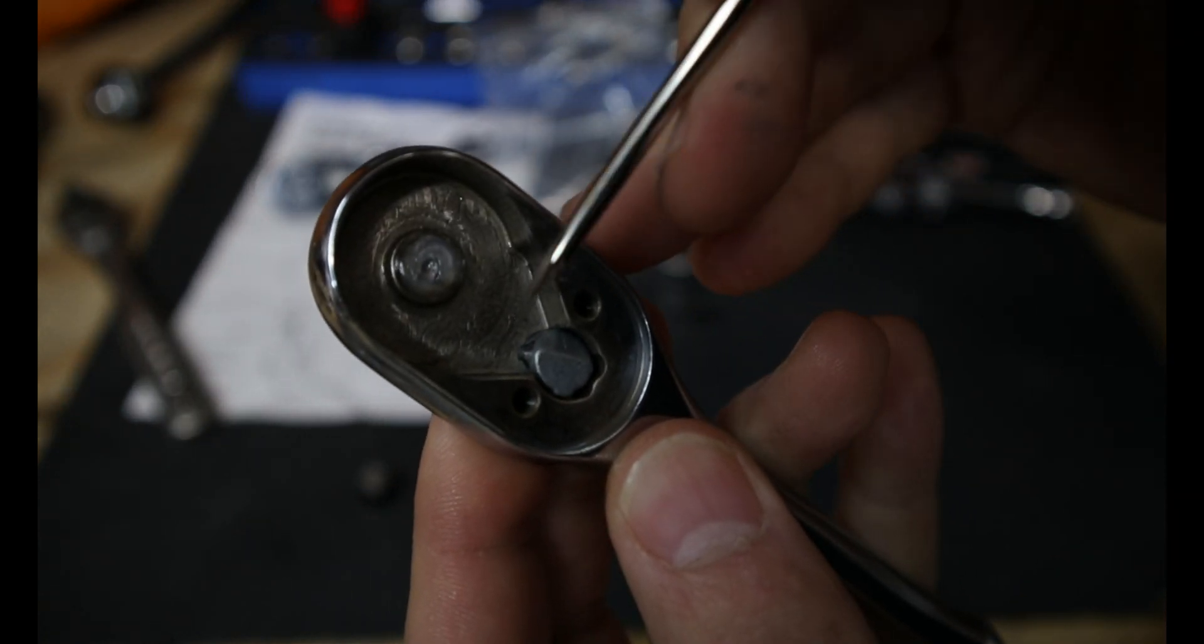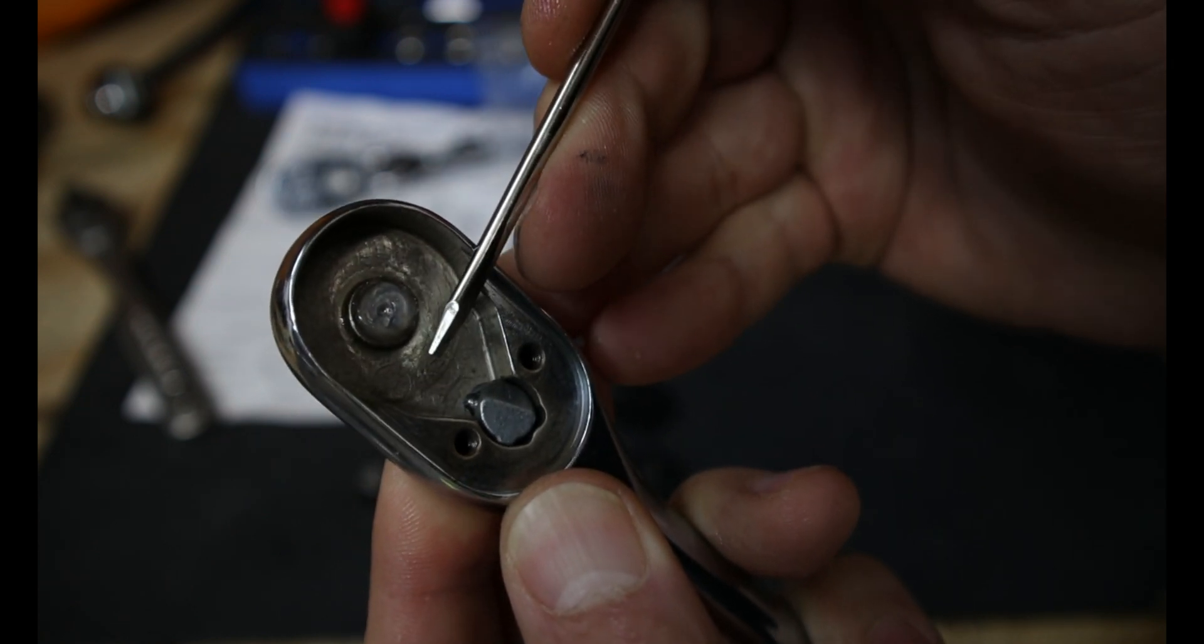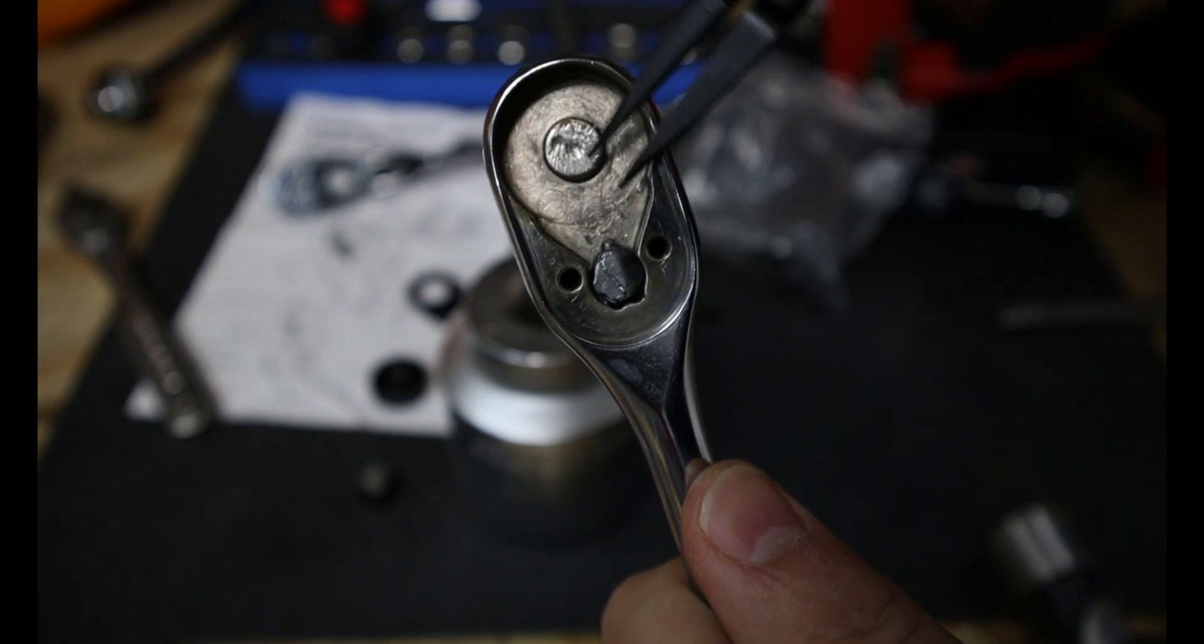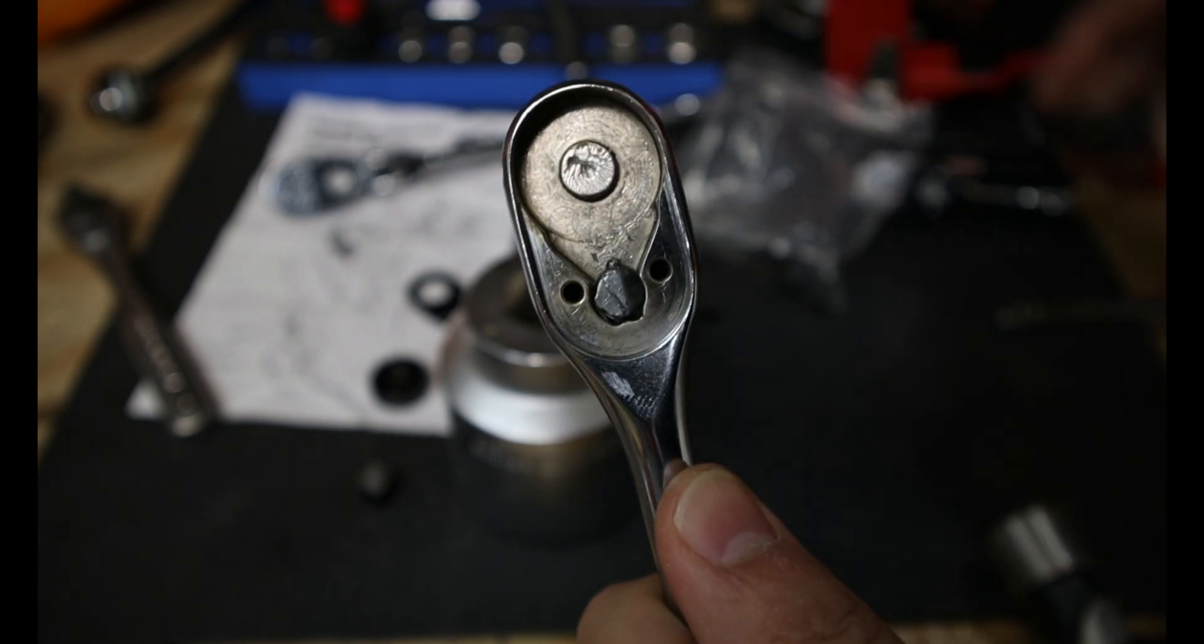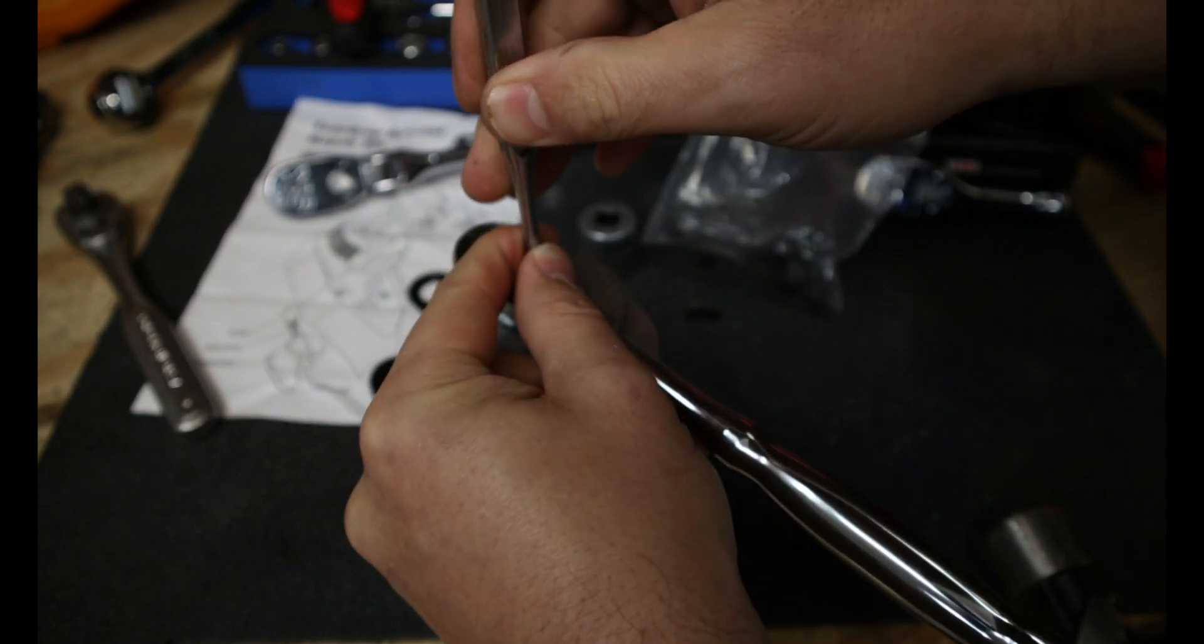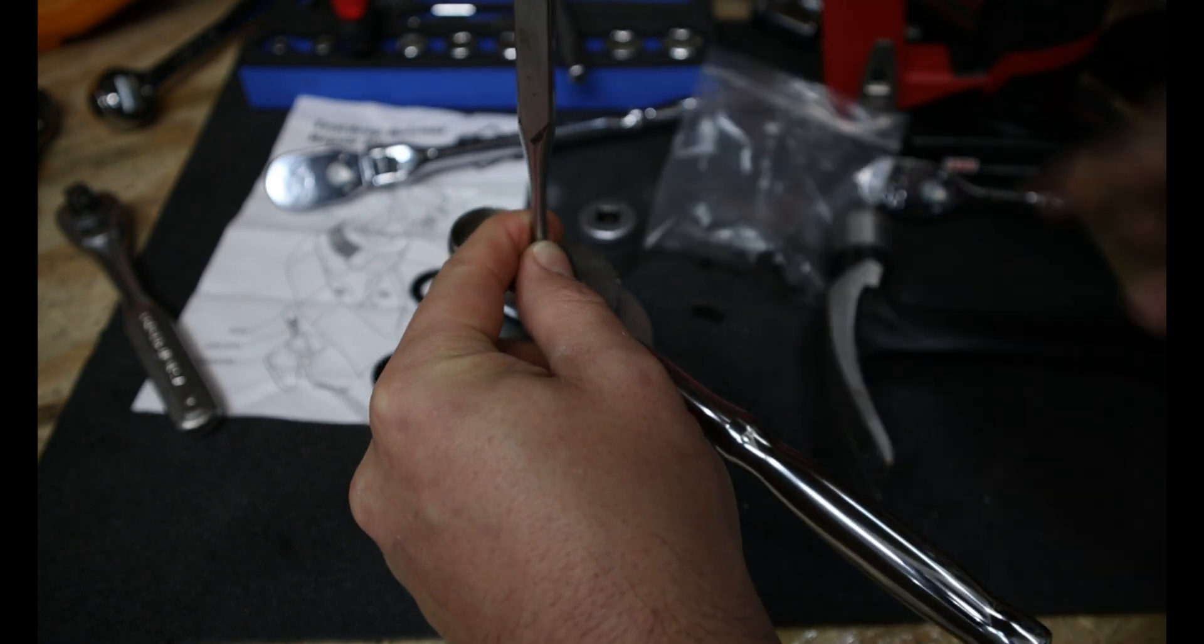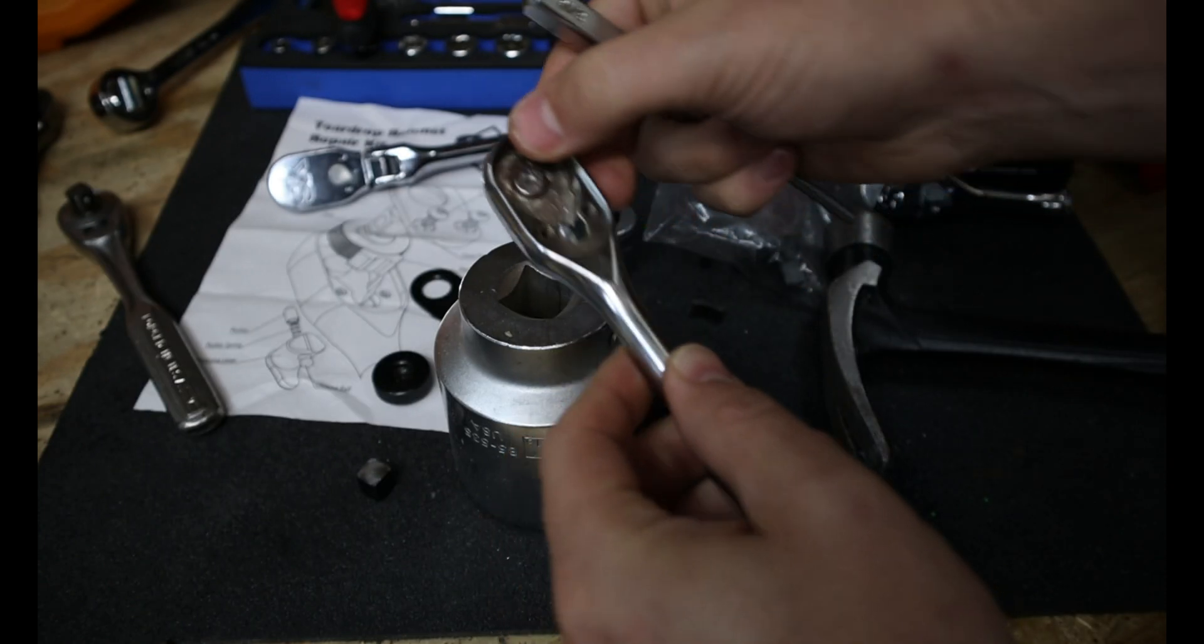And internally, we can see that we did destroy the detent on the selector switch. So we'll go ahead and put in a new rebuild kit here. So based on how everything's frozen up in there, I wasn't able to pull out the detent pin, which means we're just going to try to give this a swift kick in the pants and see if we can just punch it out of there. Which we are almost there. So we're just going to beat that out.